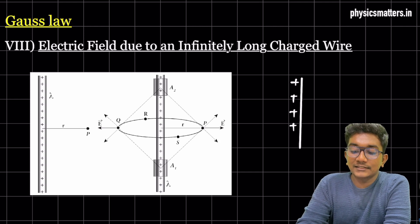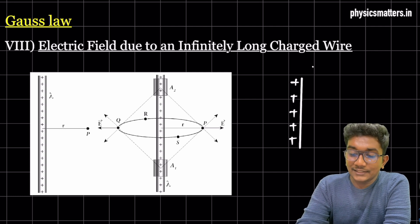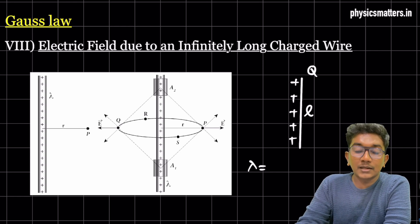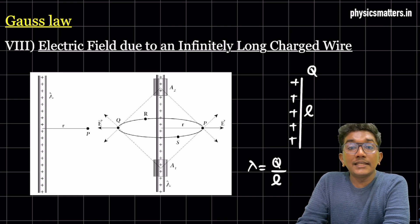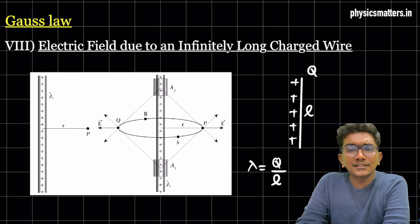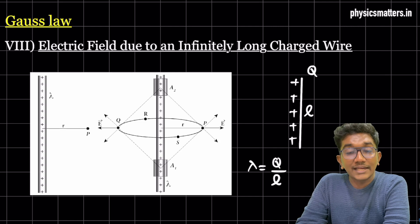There is a line and a charge Q is given to it, with length L. One new term you need to be very clear about is lambda, called linear charge density, which equals Q divided by L. Just as in 11th class we studied linear mass density and volume mass density, here we have linear charge density Q/L. This is a uniformly charged straight wire.